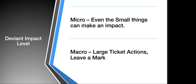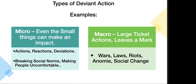So let's look at the deviant impact level. As with anything in sociology, this ties to micro and macro. Even small-scale things can make an impact all the way up to macro, large-ticket actions that leave a mark. There are types of deviant action. Micro — these are going to be actions, reactions, and deviations, breaking social norms, making people uncomfortable.